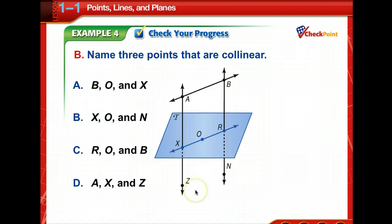Name three points that are co-linear. And there's a multitude of choices that you can name, but you've got to go from these selections. Are B, O, X co-linear? No. How about X, O, N? No. How about R, O, B? Hmm. How about A, X, Z? Yeah. A, X, Z are co-linear. So you have to understand what that word means. They lie on the same line.